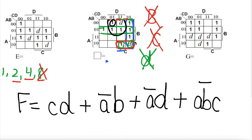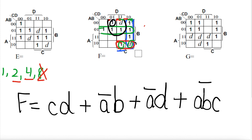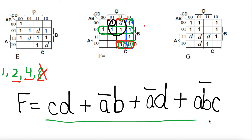That is all the circles. All the 1s are circled for this Karnaugh map. We have 4 circles and 4 equations, and now all the 1s are circled so our equation is complete. This is our final equation for the F Karnaugh map.